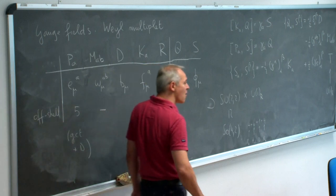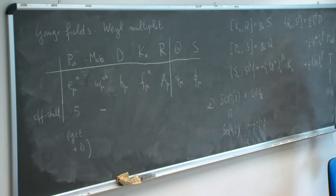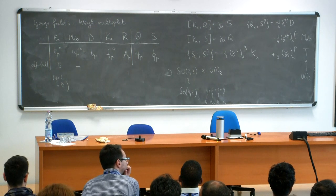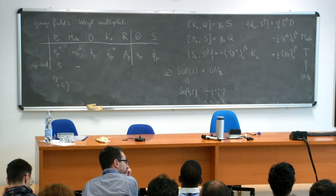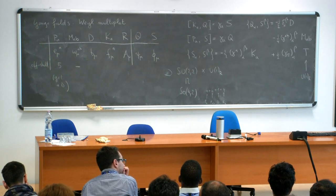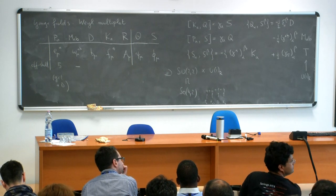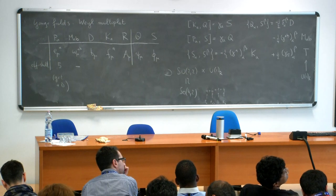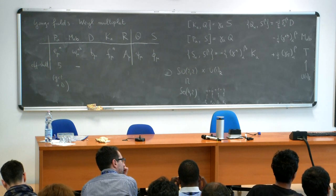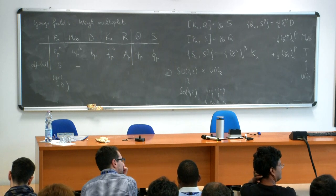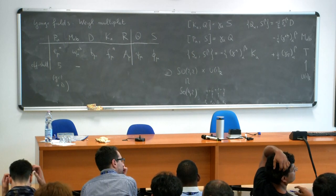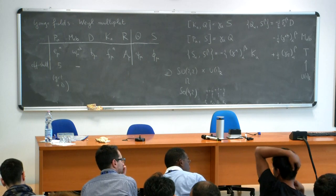Counting off-shell degrees of freedom: we impose gauge symmetry to subtract components, without using equations of motion. The graviton has six degrees of freedom off-shell. Using general coordinate transformations plus dilatations reduces this to five. B_μ has four components but special conformal transformations are a gauge symmetry, so we can gauge away B_μ entirely — zero off-shell degrees of freedom. The spin connection and F_μA also turn out to be dependent fields. F_μA's equation of motion is algebraic, so eliminating it expresses it in terms of other fields — similar to how the spin connection is determined by the vielbein.